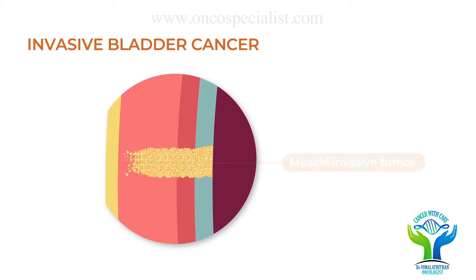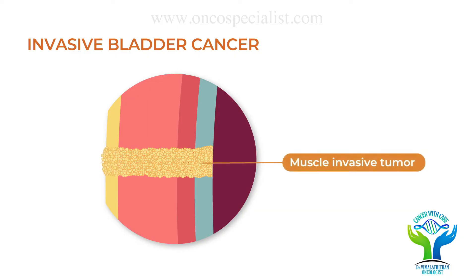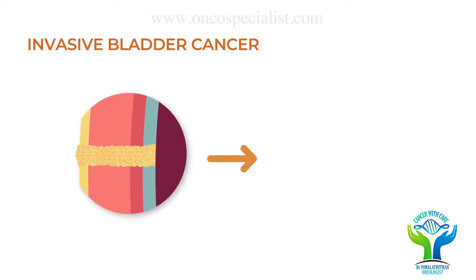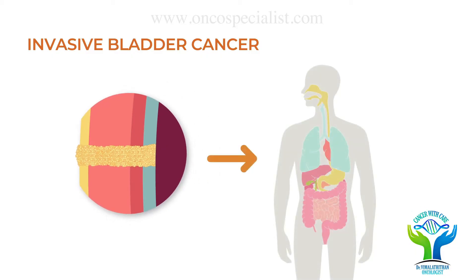To treat this type of tumour, a radical surgery is needed. This surgery is called radical cystectomy — the complete removal of the urinary bladder.